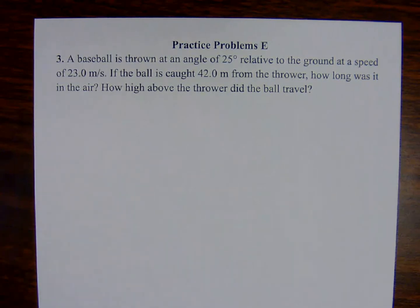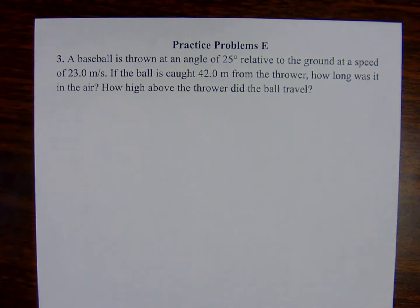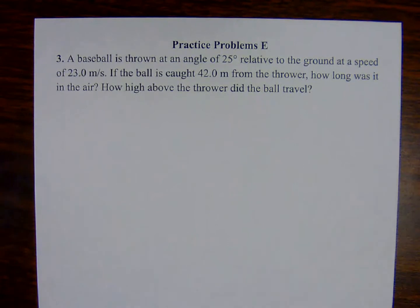All right, practice problem number three associated with sample problem E. A baseball is thrown at an angle of 25 degrees relative to the ground at a speed of 23.0 meters per second. If the ball is caught 42.0 meters from the thrower, how long was it in the air? And how high above the thrower did the ball travel?